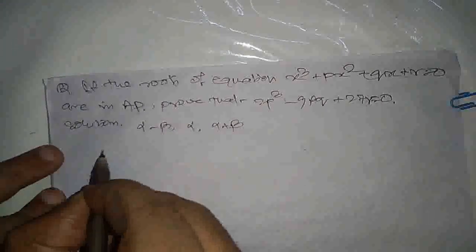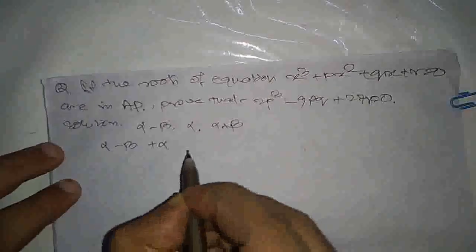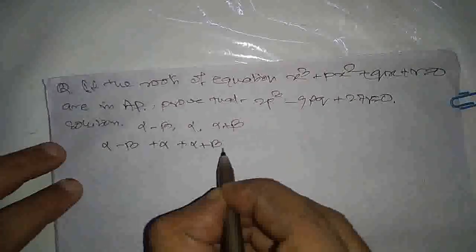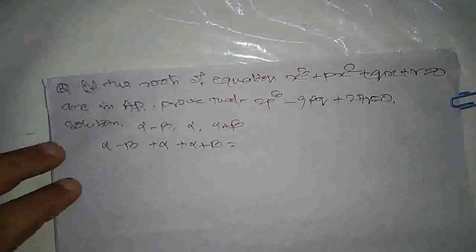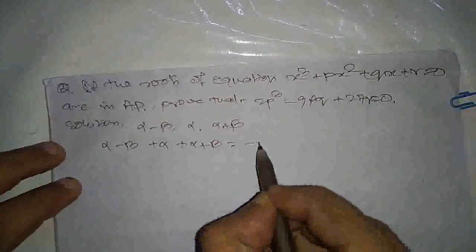So, sum of roots, how much will it be? Alpha minus beta plus alpha plus alpha plus beta equal to minus p by 1, means minus p.